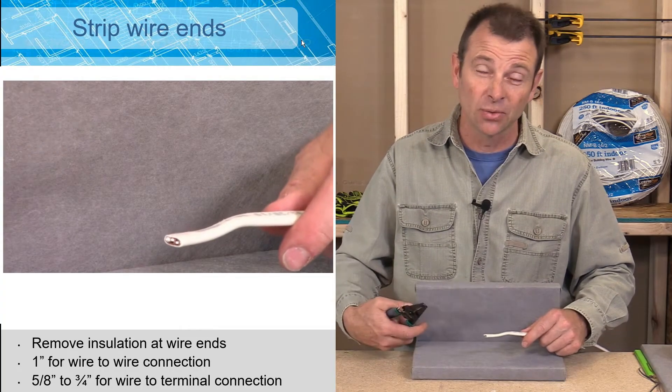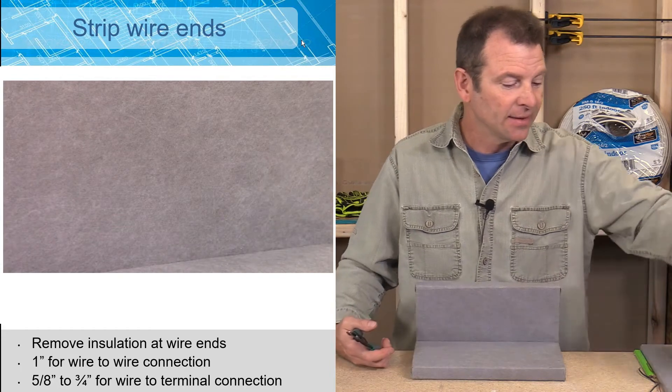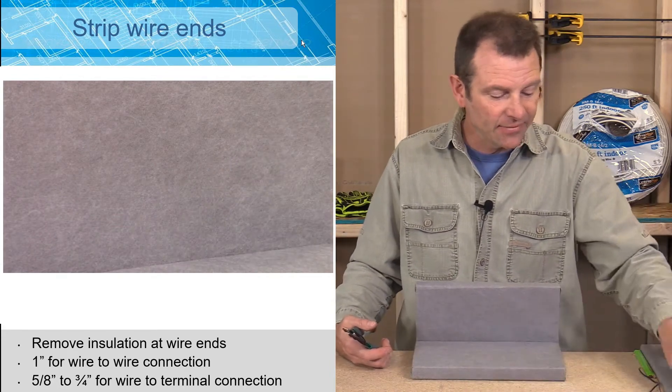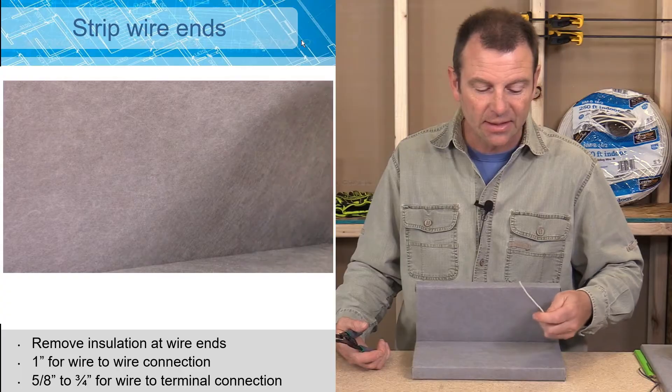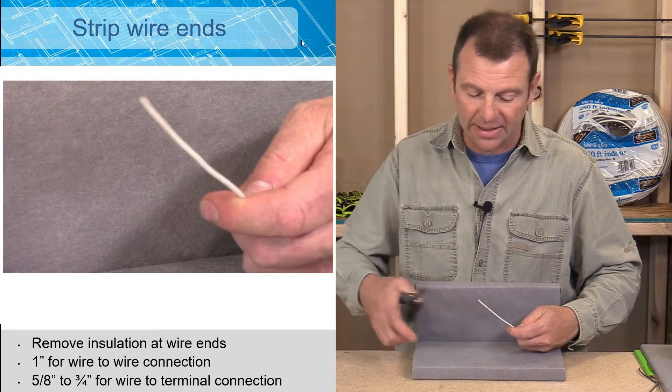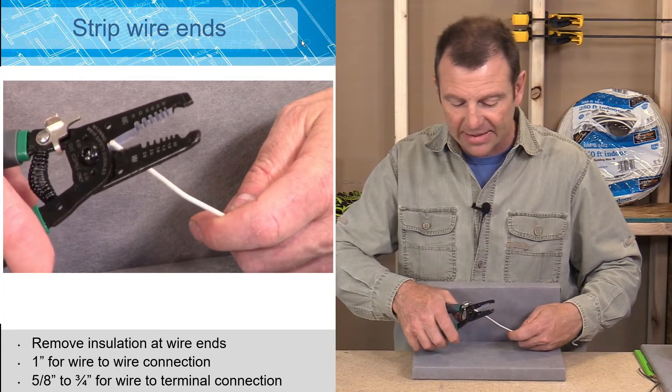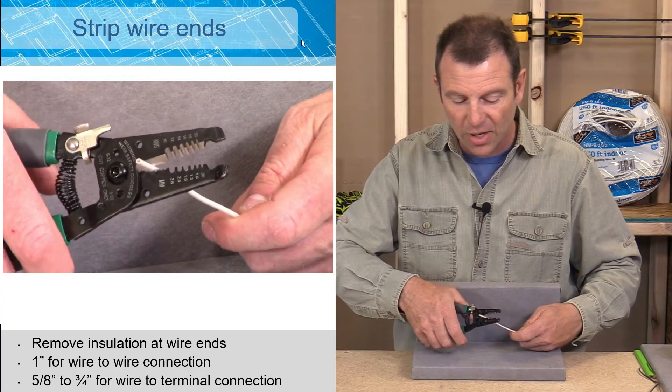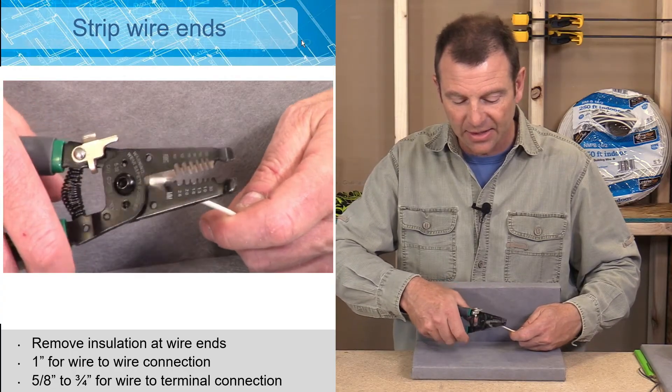You can also cut the individual conductors inside. So here I have a 14 gauge conductor that would be inside of my Romex, and that set of blades inside will cut this wire very cleanly and very easily.